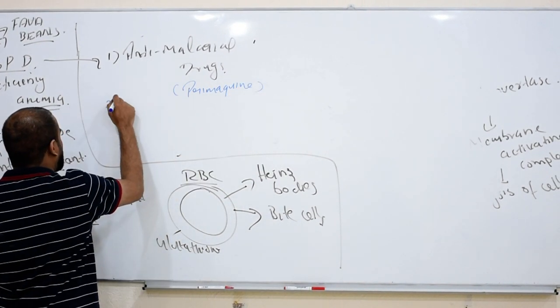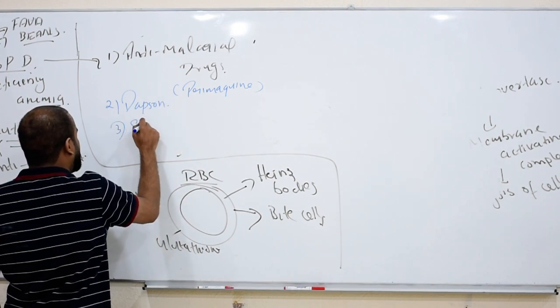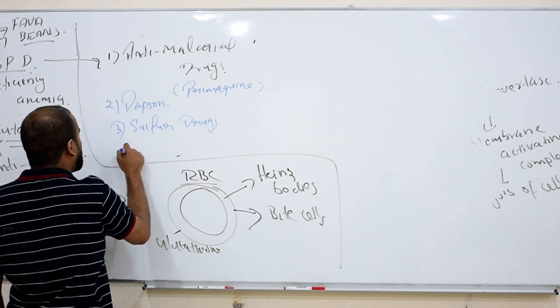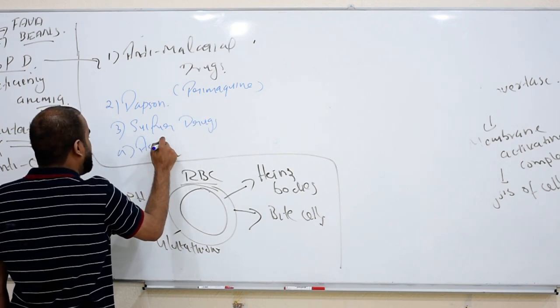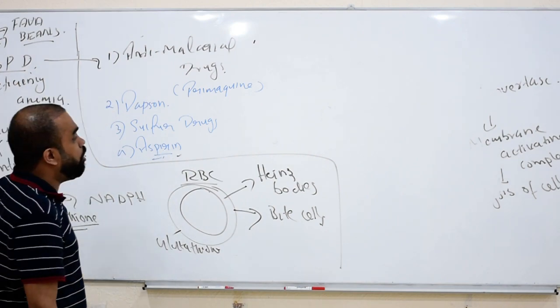There's a drug for celiac disease that is called dapsone or sulfur drugs - dapsone, other sulfur drugs. Never give them aspirin. So these are contraindicated in which babies? The babies who are having normocytic anemia, G6PD. This will cause more hemolysis.